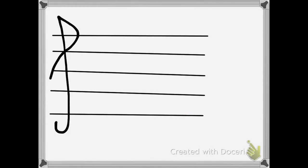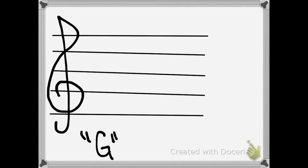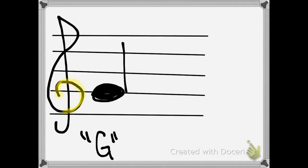If you remember from our first video, the music staff has five lines, and you're always going to have a treble clef right at the beginning. Now the treble clef is also called the G clef, because this little guy at the bottom here is always going to circle where G is. G is this line — you can see that this line lines up with what the treble clef is circling.